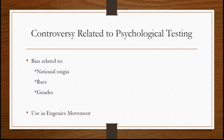I want to briefly mention some of the controversy related to psychological testing. One concern is that historically, a lot of tests have been developed by white European-descended men, so these tests may be biased to best measure the qualities of people who are like the test developers. There have been findings that people from different countries, races, and genders than the test developers may not score as well. The most controversial tests in this regard are some of the intelligence tests — in the U.S., white middle and upper class people tend to do the best on many psychological tests.